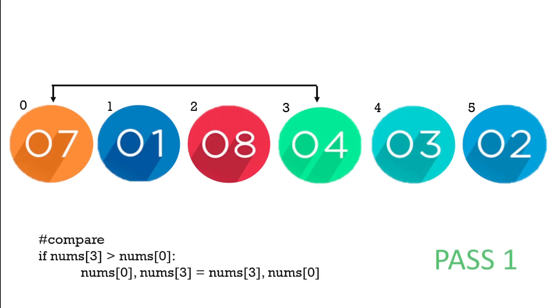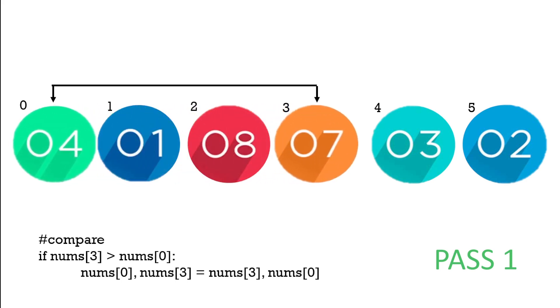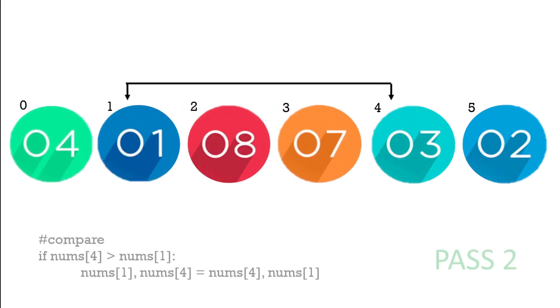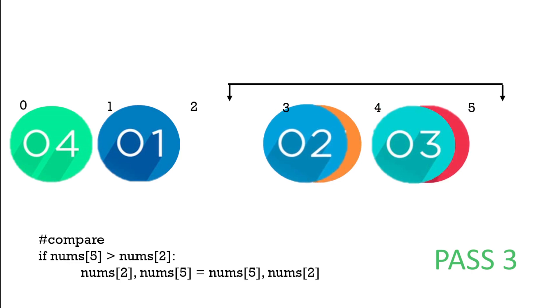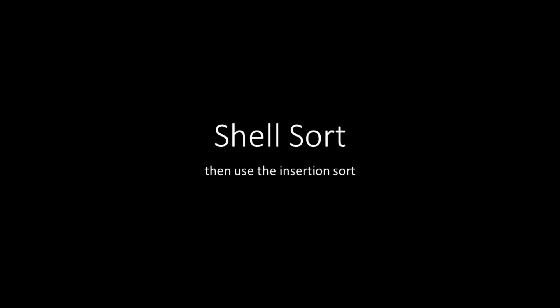The shell sort makes the insertion sort more efficient by moving the lower numbers towards the beginning of the list, and it does this on several passes. In this example, using a gap of three, then going back to the insertion sort of one.